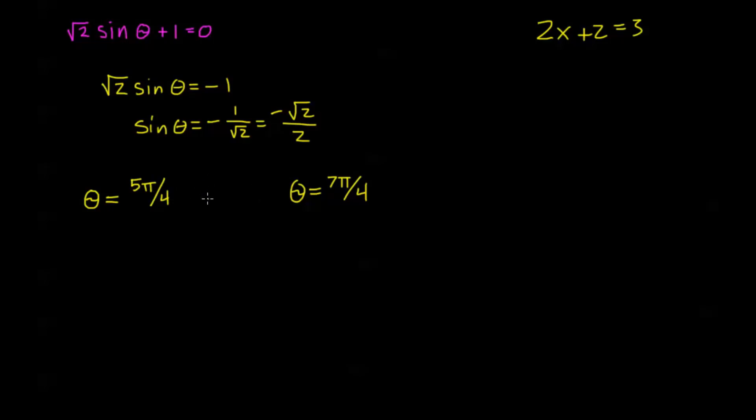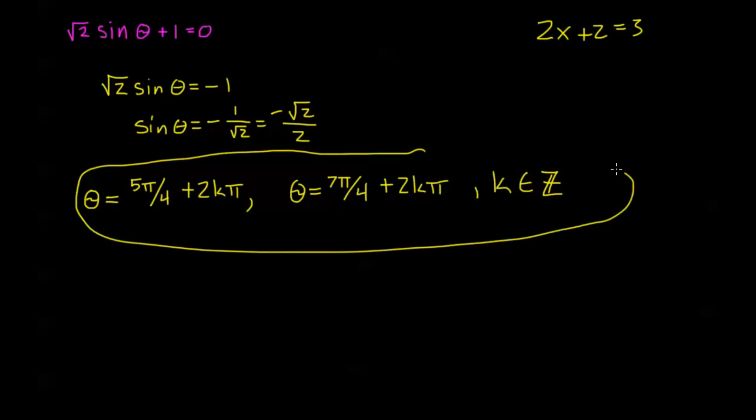So of course now these are my particular solutions of one period. To generalize these, I add 2kπ to each of them. θ = 5π/4 + 2kπ and θ = 7π/4 + 2kπ. And we note that we've used k here, so we need to decide what k is, and k is going to be an element of the integers, so any integer. This is our general solution for √2 sin θ + 1 = 0. These are all the values of theta for which this equation is true.